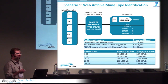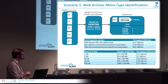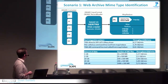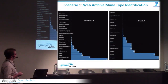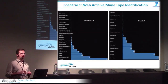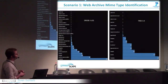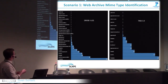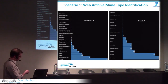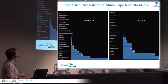You get a growing throughput the more data you have, meaning the more data you process, the more throughput you get from the Hadoop system. When comparing different identification tools, they have different granularities and output types, so you can merge and compare them — but that is another story.